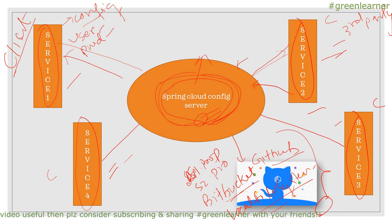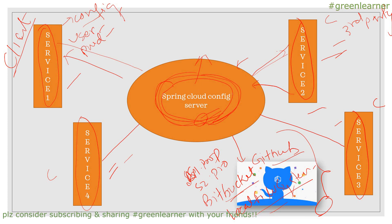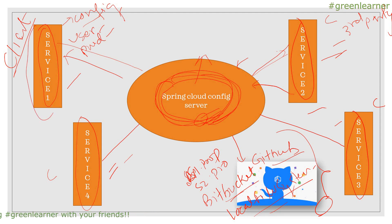In the subsequent video, I'm going to demo how you can create a Spring Cloud Config Server, what are the properties, and we will also create different clients to use this Spring Cloud Config Server. We will make changes to our GitHub, they will map these properties, and we will see how the changes are reflected at service endpoints.